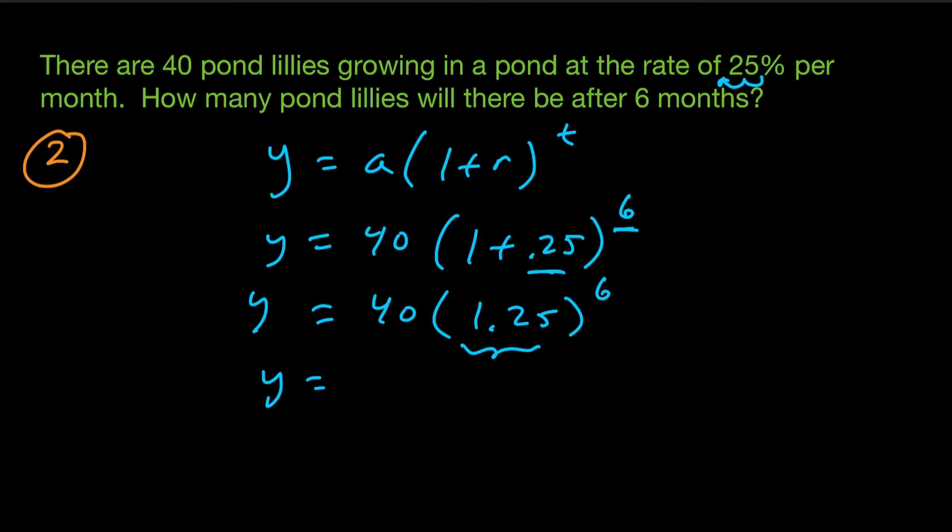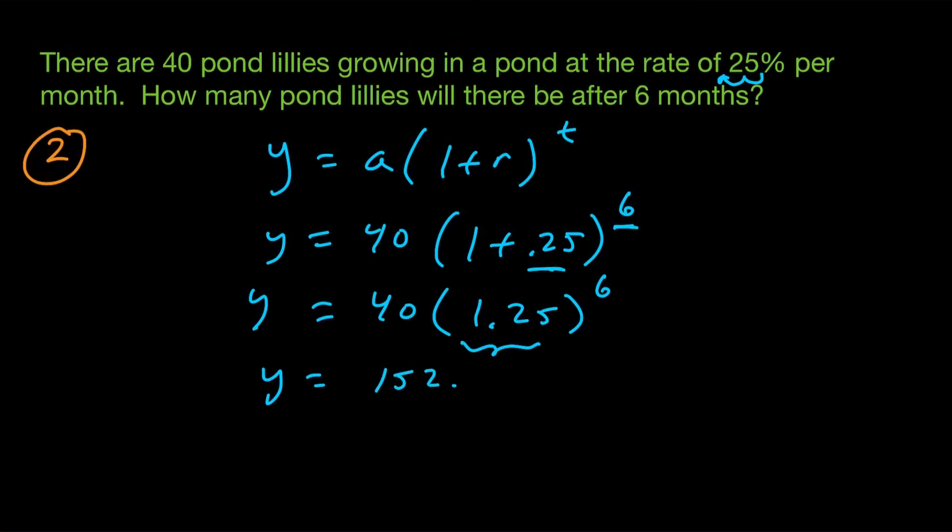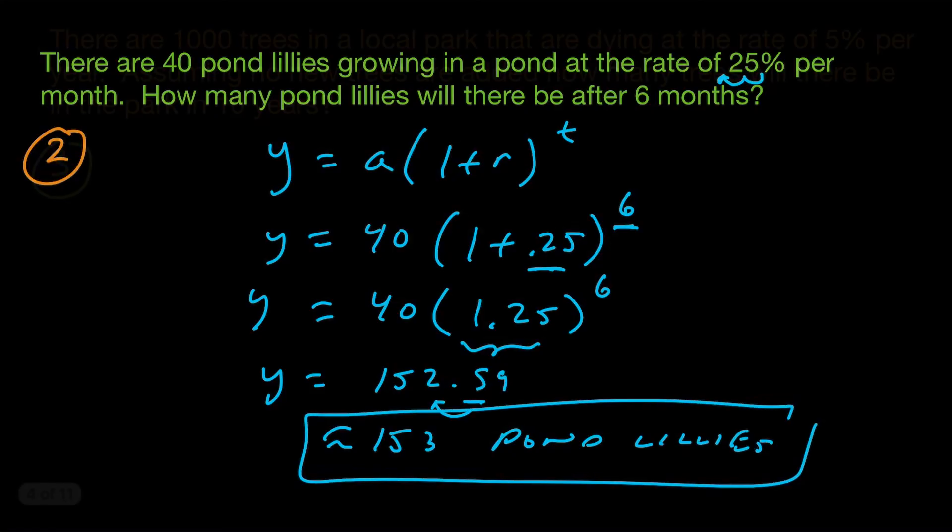So let's see what we get here. Go ahead and check my work. So I'm getting 152.59, but we're rounding to the nearest pond lily. So since this is 0.5, I'm going to round that up to 153, approximately 153 pond lilies. And you got it.